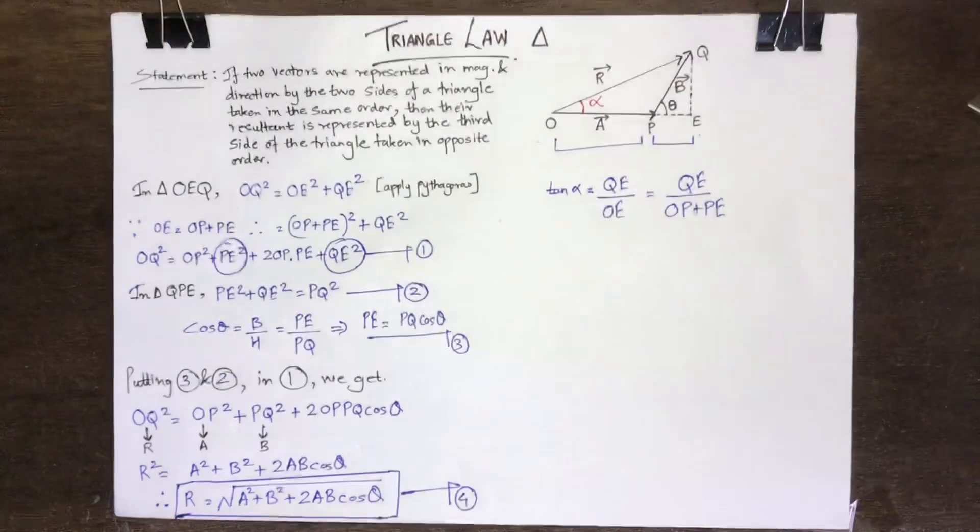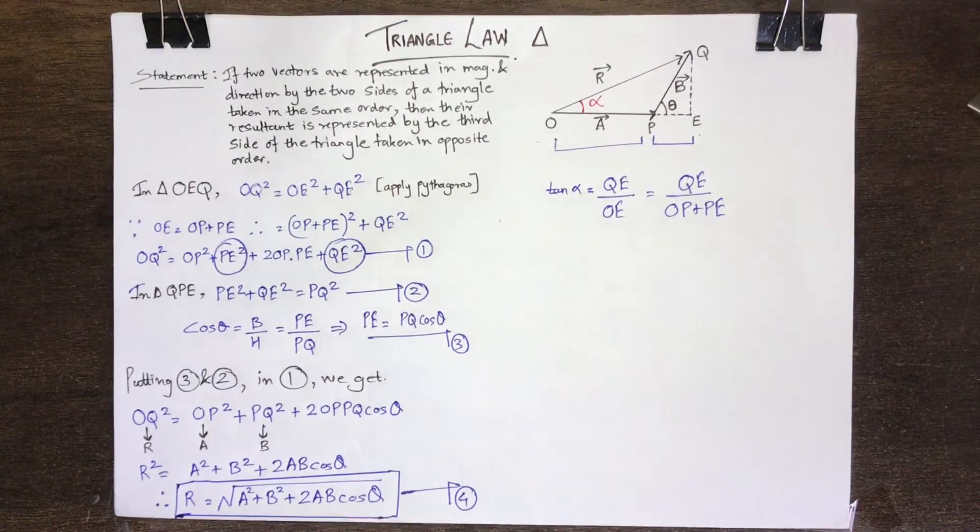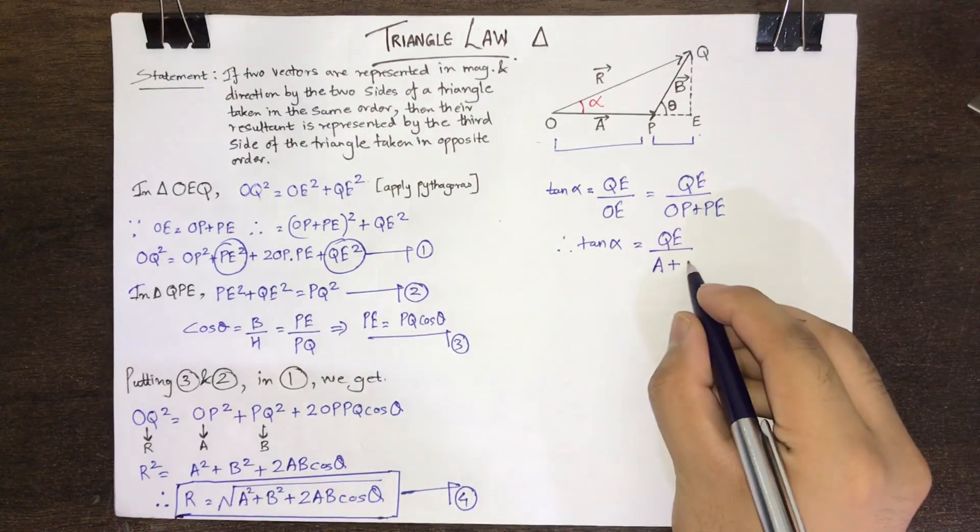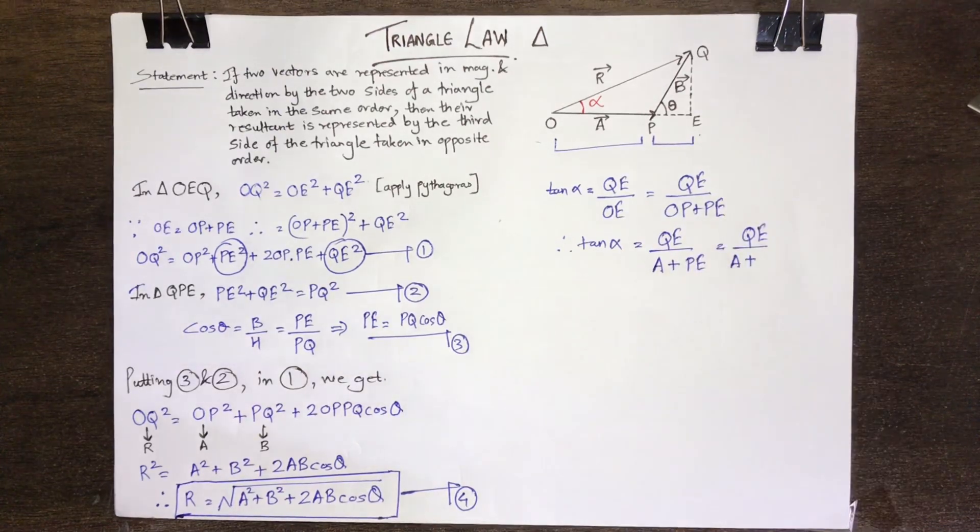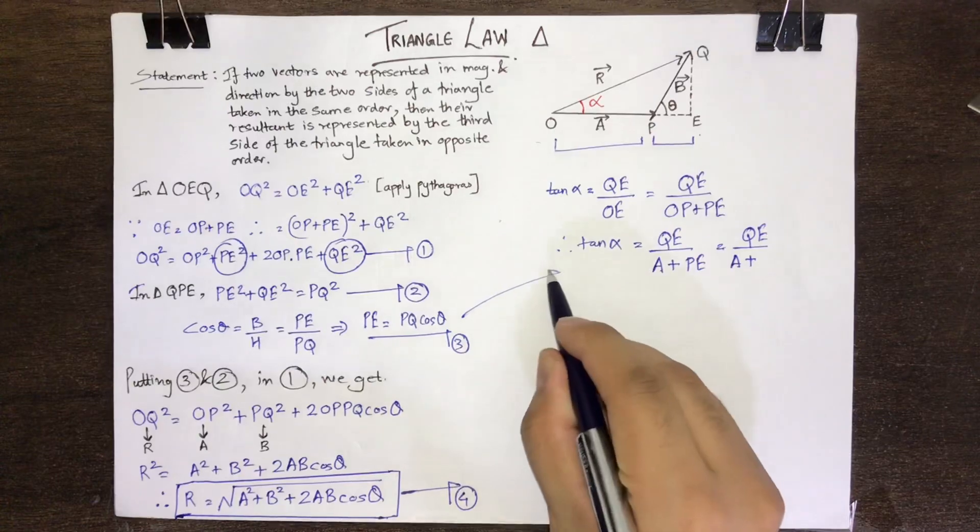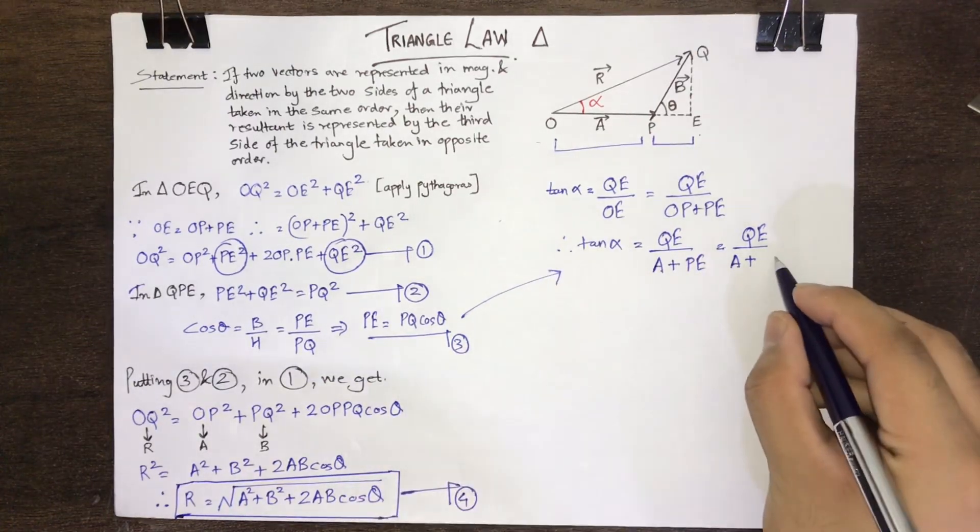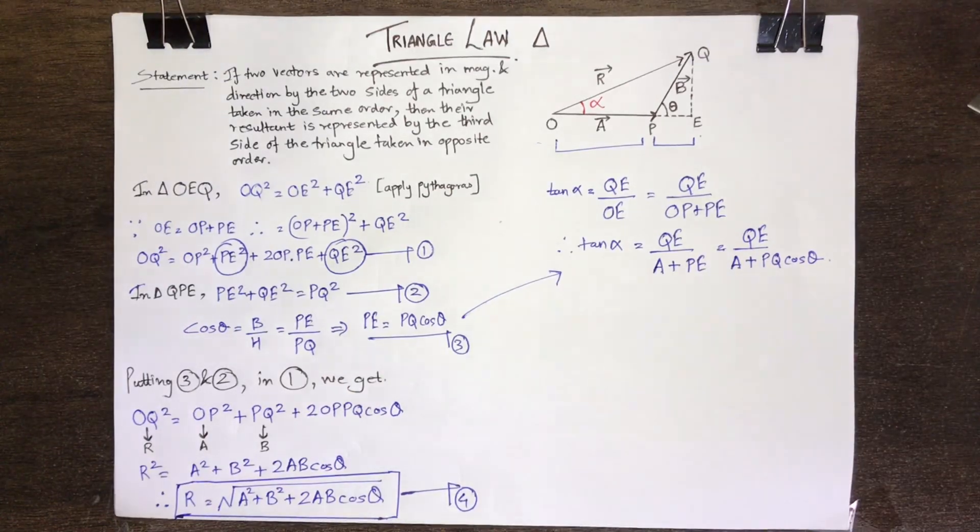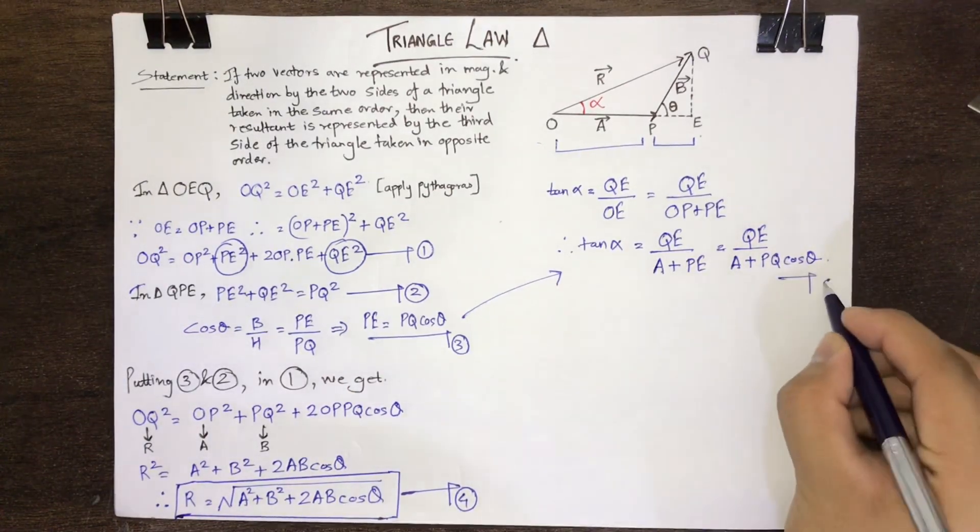Therefore, putting the respective value of OP, which is equal to A vector, we get tan alpha is equal to QE upon A plus PE. Now for the value of PE, using equation number 3, we get tan alpha is equal to QE upon A plus PQ cos theta. This will be our equation number 5.